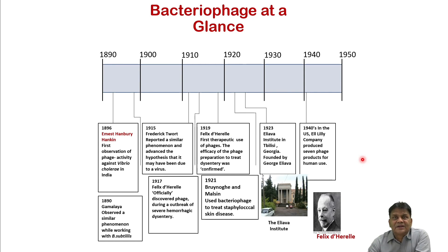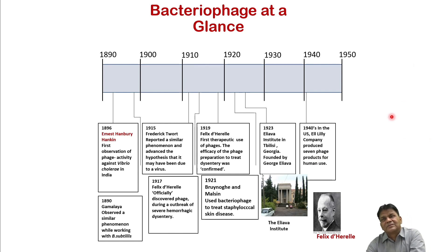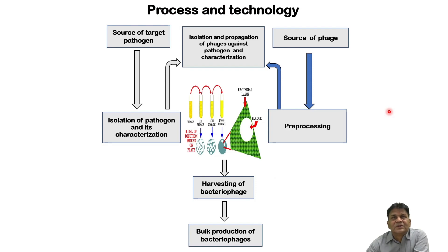Phage therapy went into the dark when antibiotics were introduced, because broad-spectrum antibiotics worked without needing to identify the exact bacteria. However, phages are strain-specific — like smart bombs — which sometimes caused failures, and easily available antibiotics were preferred. Now we have reverted to a pre-antibiotic era situation and are compelled to seek different alternatives.